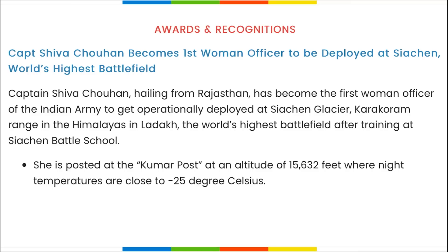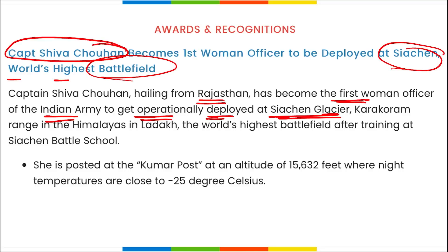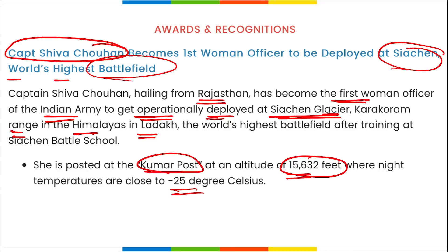Captain Shiva Chouhan became the first woman officer to be deployed at Siachen — the world's highest battlefield — in the Karakoram Range in the Himalayas, Ladakh. She is the first women officer of the Indian Army to be operationally deployed at Siachen Glacier. She has been posted at Kumar Post at 15,632 feet altitude, where the temperature drops to minus 25 degrees at night.